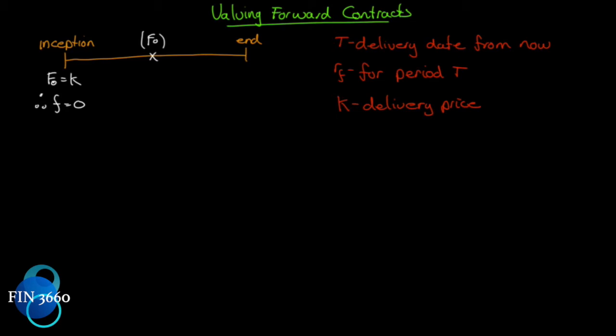We might owe the other side something, or the other side owes us something, so we need to figure out what it's worth today to exit. Also, if it's a futures contract, the futures contract is marked to market every day, so every day we need to figure out the value of the contract so it can be marked to market.